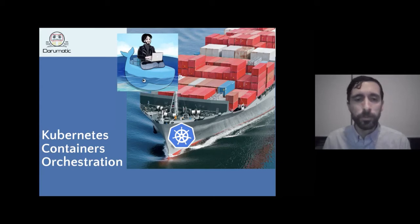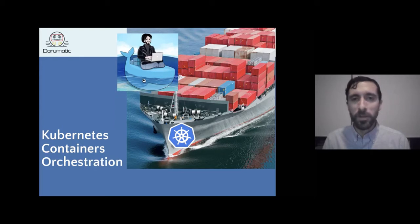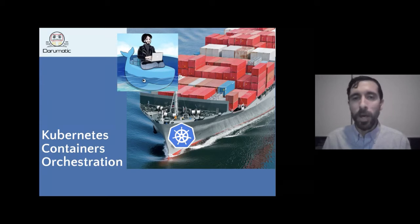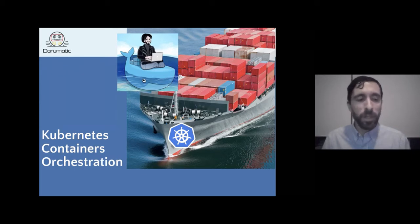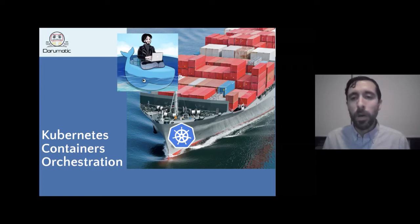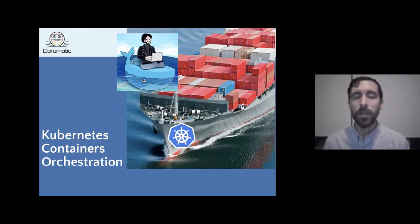That need for orchestration led Google to release an influential paper on large-scale cluster management called Borg. Borg solved the problem of running many applications across many data centers. After Docker came along, they updated to use containers rather than virtual machines. The paper introduced declarative configuration — rather than executing commands like Puppet or Ansible, you describe how your infrastructure and application deployment should look, and the system ensures it's running.